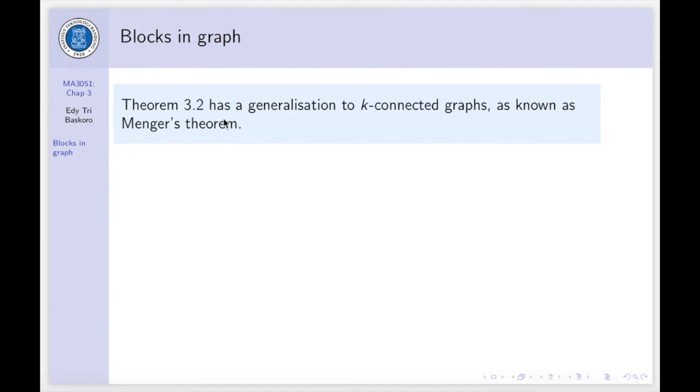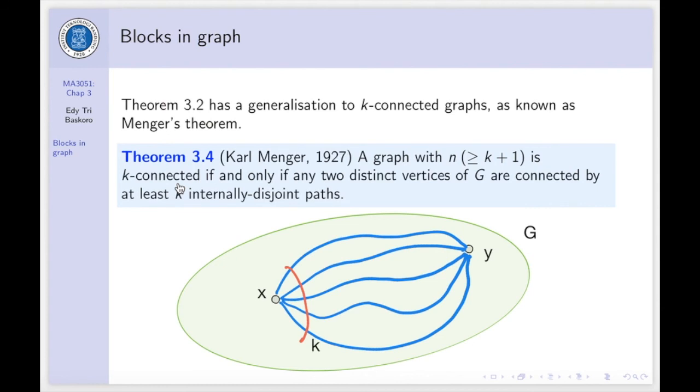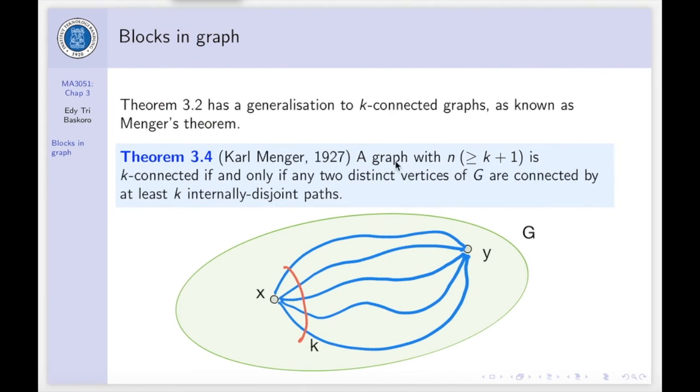The theorem 3.2 has a generalization to K-connected graphs as known as Menger's theorem. The Menger's theorem is stated as follows. A graph G with N vertices is K-connected if and only if any two distinct vertices of G are connected by at least K-internally disjoint paths. So, this is the illustration of Menger's theorem. So, if G is K-connected, then, any two vertices X and Y here will be connected by K-internally disjoint paths or vice versa.